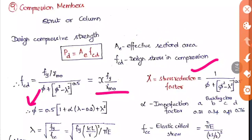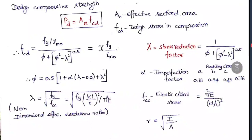The expansion for phi is: phi = 0.5 × [1 + alpha(lambda − 0.2) + lambda²], where alpha is the imperfection factor based on the buckling class. For class A it is 0.21, for B it is 0.34, for C it is 0.49, and for D it is 0.76. You directly take and substitute this alpha value in the formula.